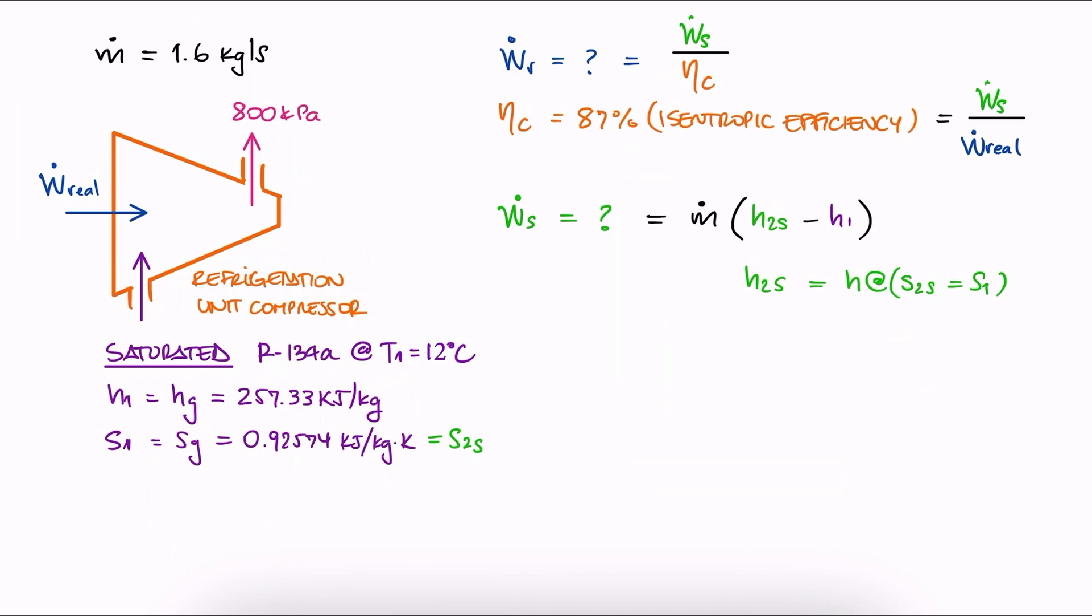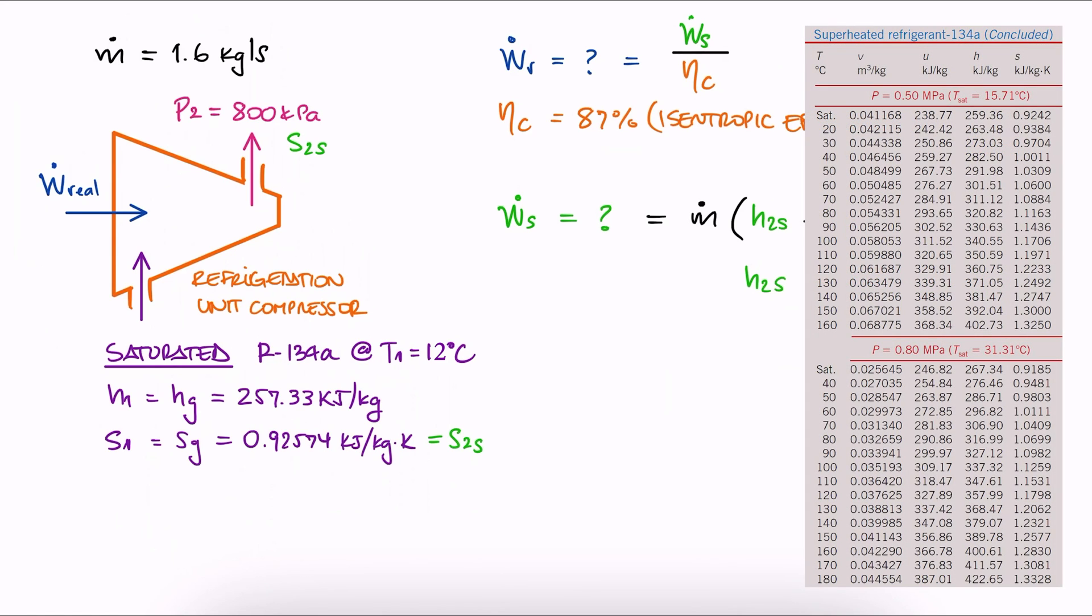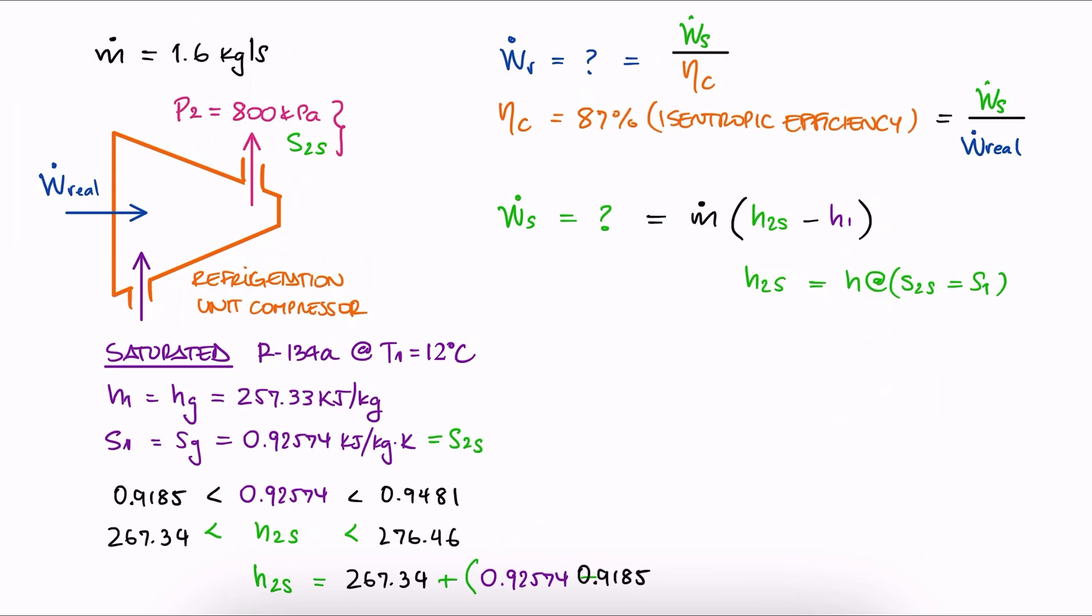With S2S and the pressure at the exit P2, we can go to the superheated tables for P2 and look for S2S under the values of the column for S. Since S2S is between these two specific entropy values, H2S is between these two values. With those four numbers, we interpolate to find H2S.